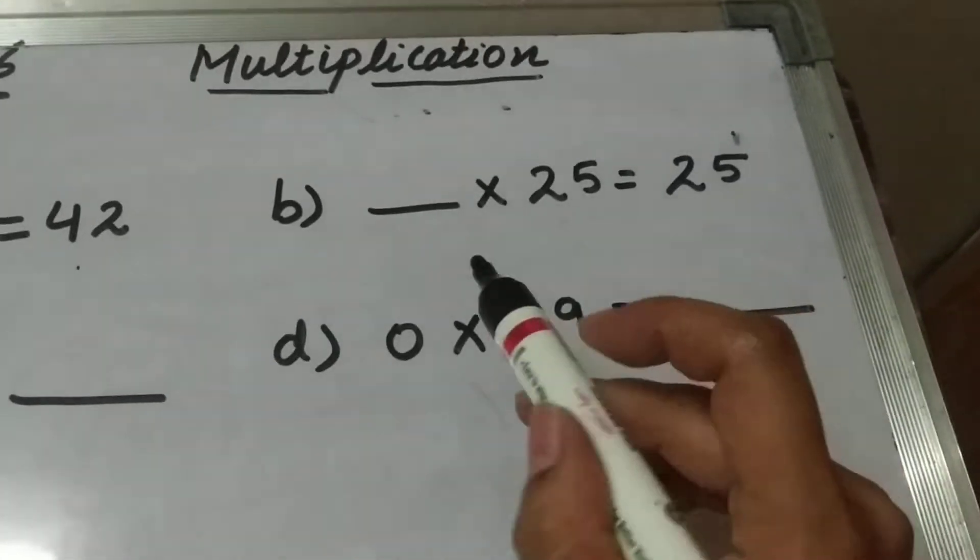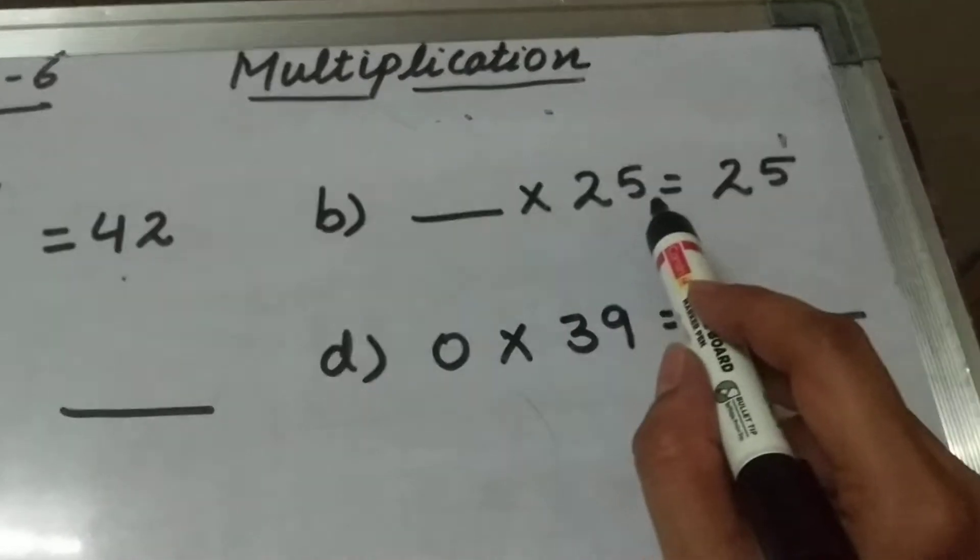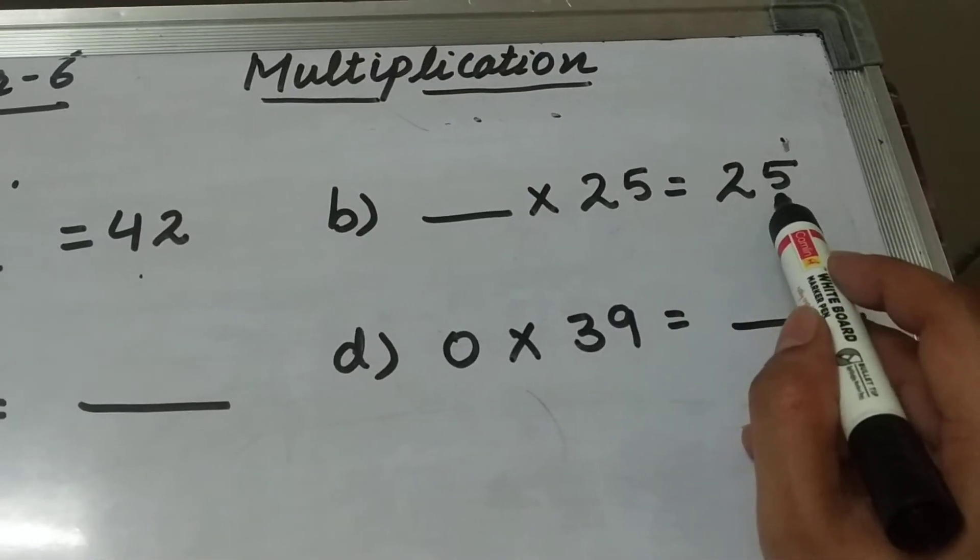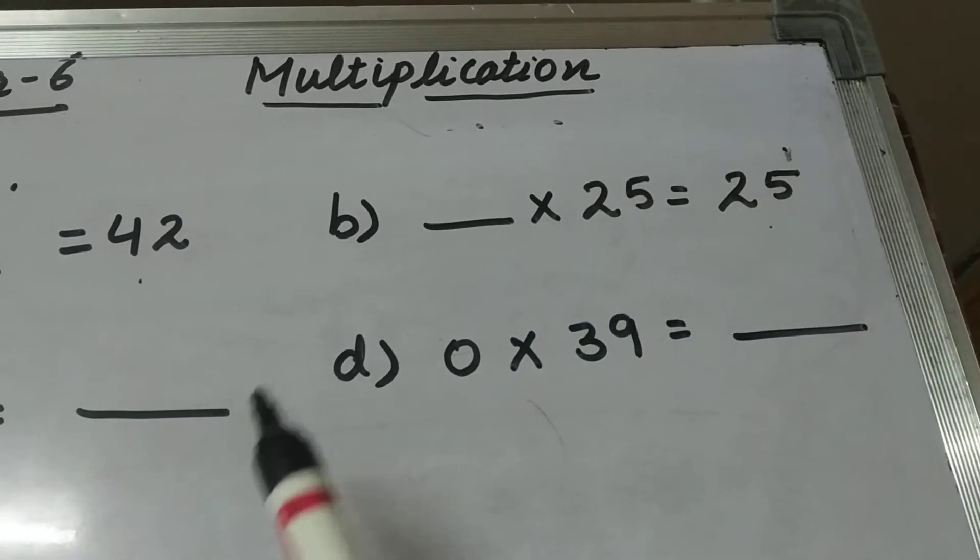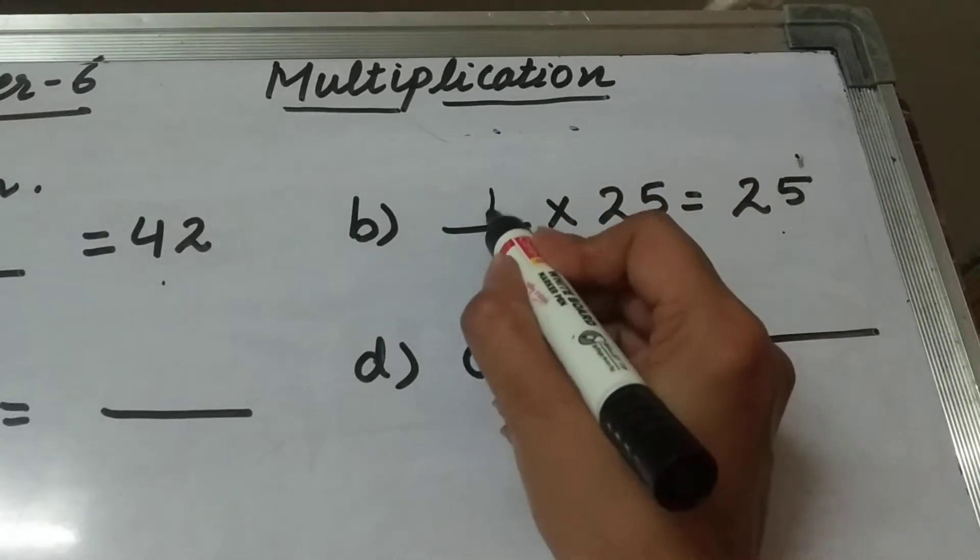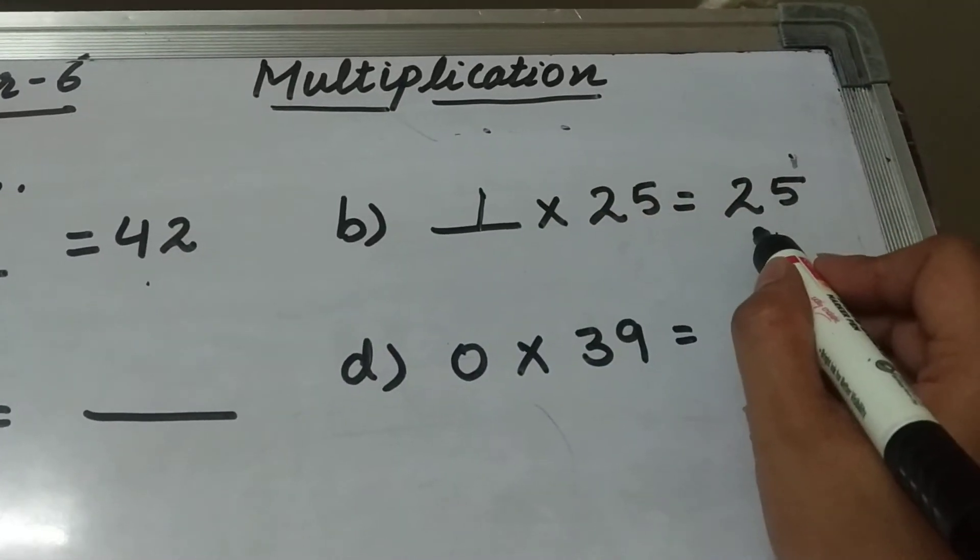Part B is blank multiplied by 25 equals 25. Again, by which number should I multiply 25 so that I get 25 again? If I multiply 25 by 1, I will get 25.